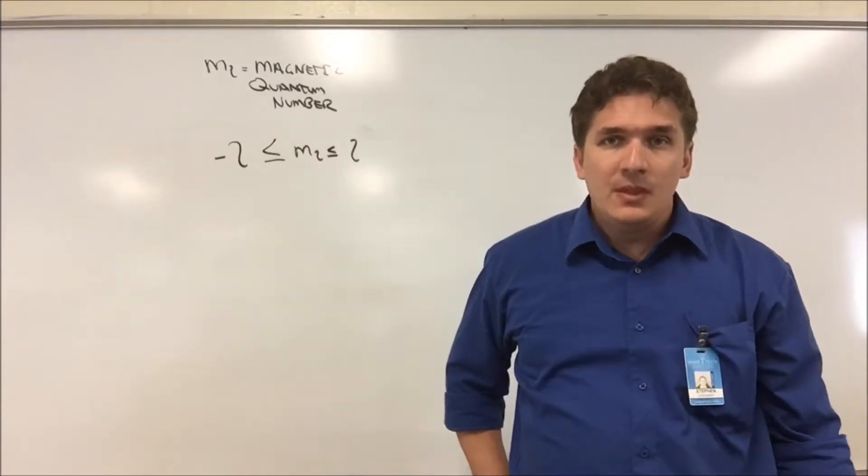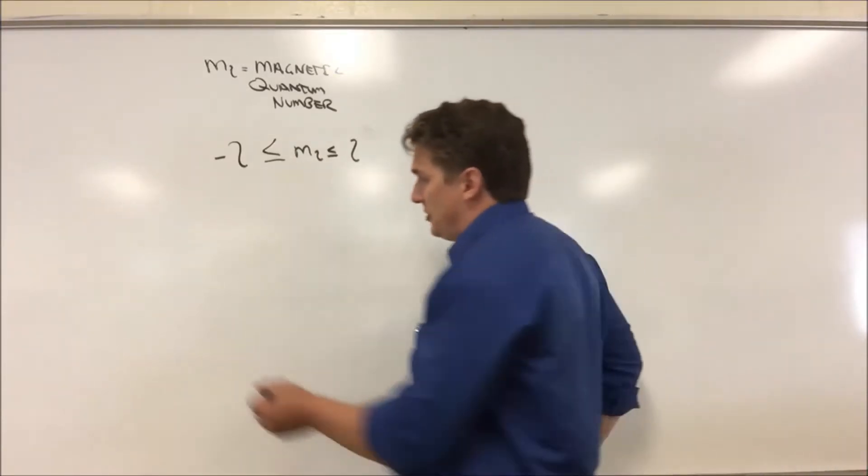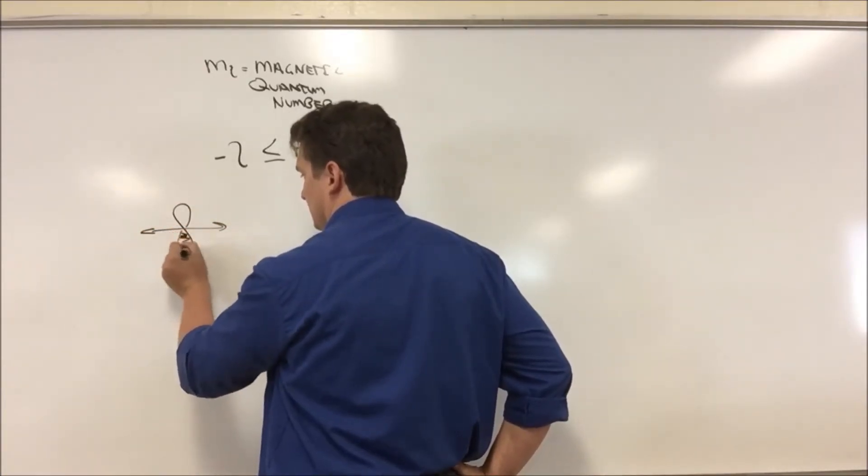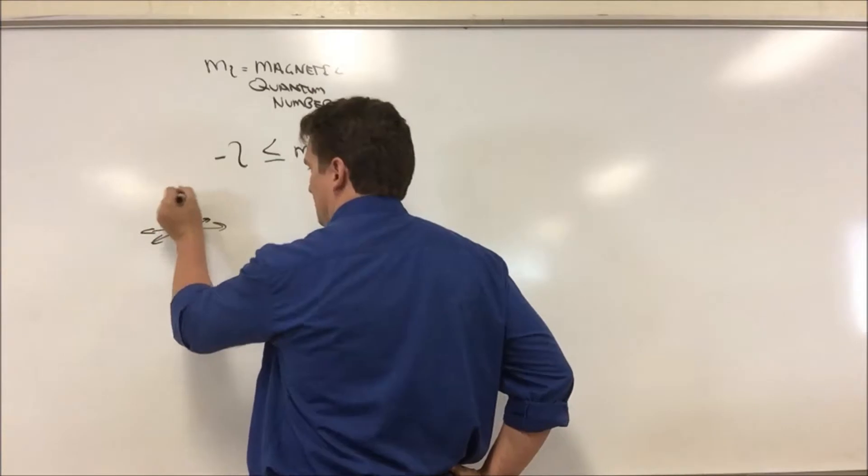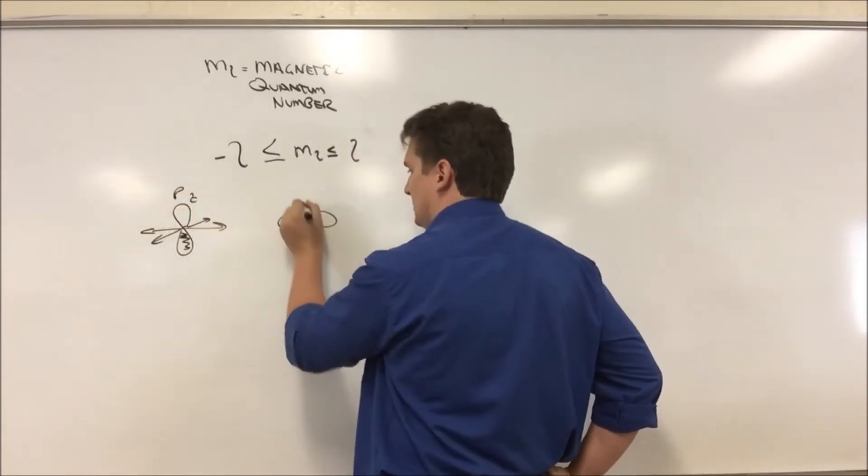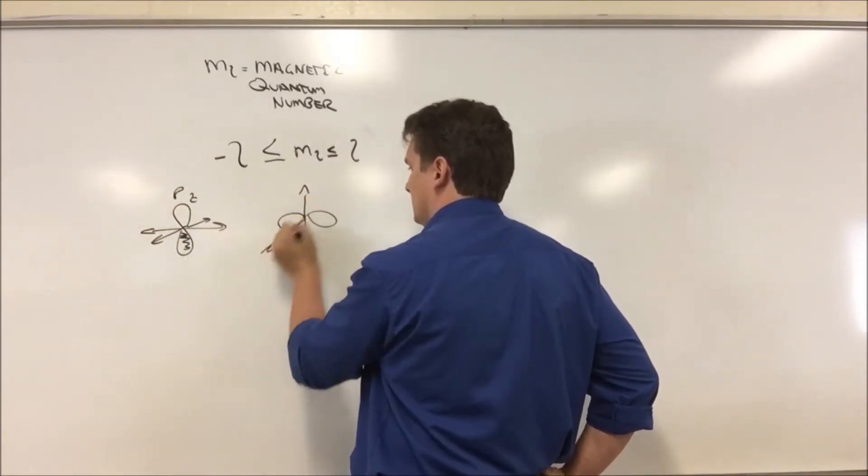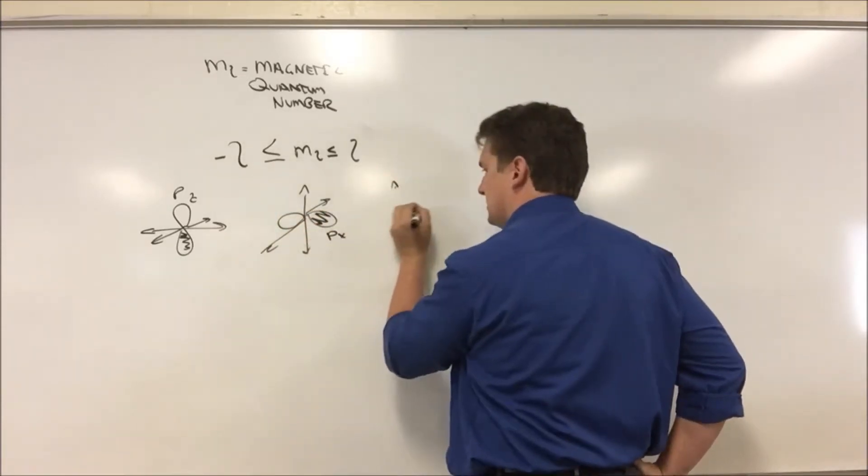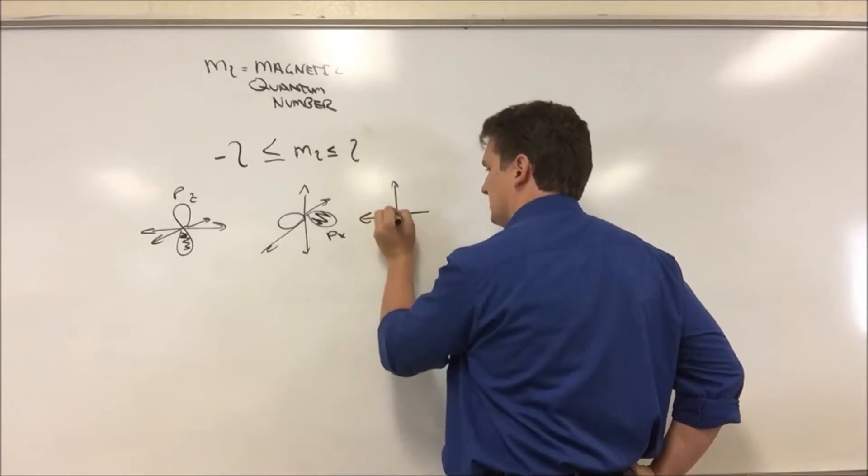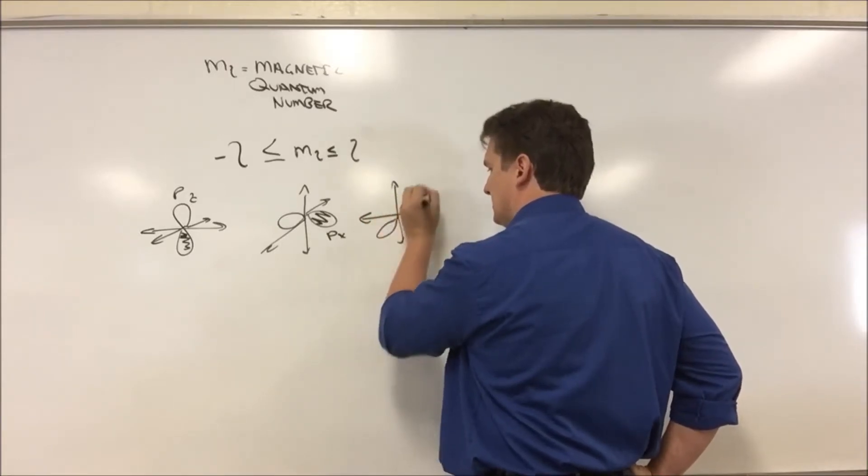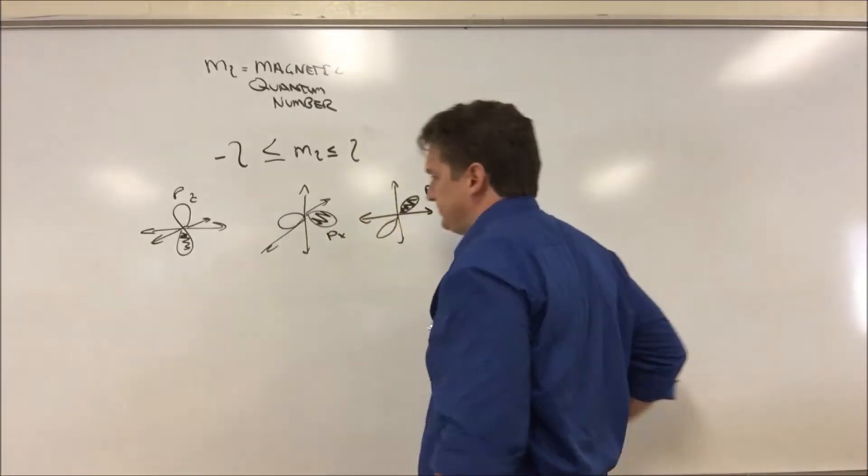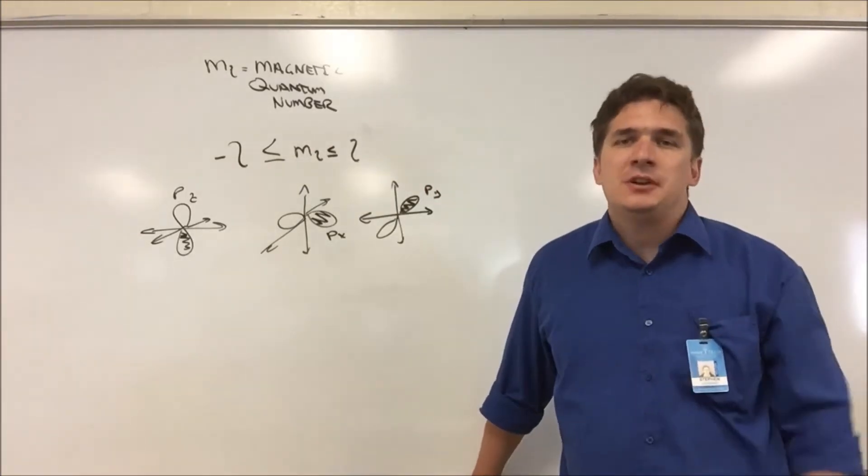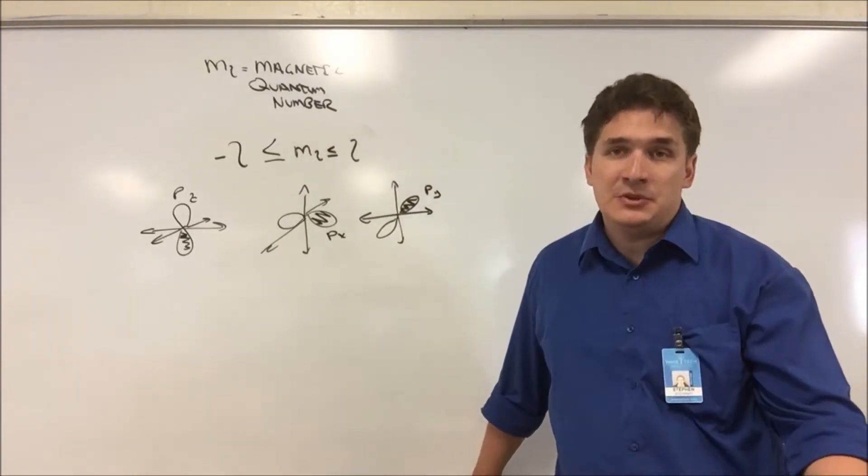Why do we do this? We have three p orbitals, so I'll draw them out: p_z, p_x, and p_y. Which of the three are you in? This is what your magnetic quantum number is going to tell you.